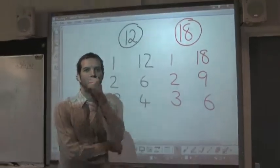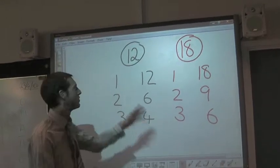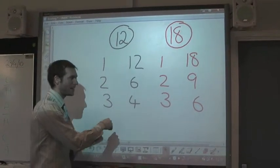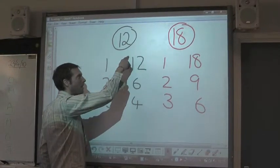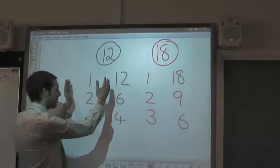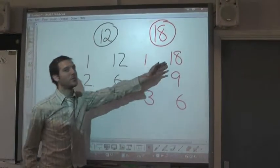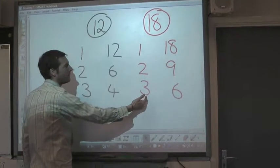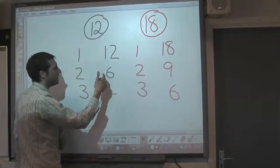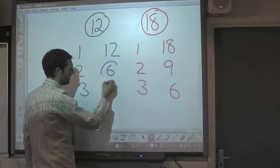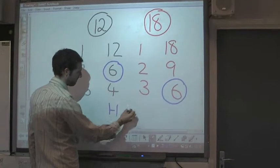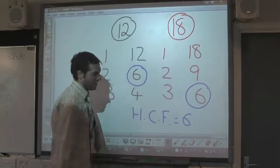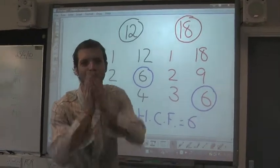What was that other thing? Highest common factor. Highest common factor of 2 numbers. Common — it's got something in common. Highest — what's the highest number that goes into both 12 and 18? Looking at the two lists: 1 is in both, 2 is in both, 3 is in both, 4 — no, 5 — no, 6 is in both. So the highest common factor, HCF, is 6. Wonderful!